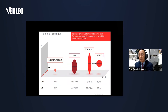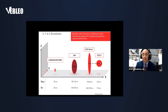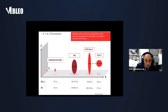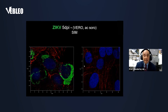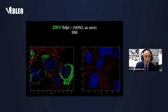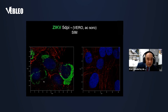Recent developments in light microscopy — especially fluorescence microscopy — with techniques such as STED, GSD, or structured illumination microscopy, allow us to obtain resolutions down to 20 nanometers. This is very important in biology because we can use fluorescence microscopy to visualize very small structures. In this example, we have cells maintained in culture that were infected with the Zika virus, which appears here in green.